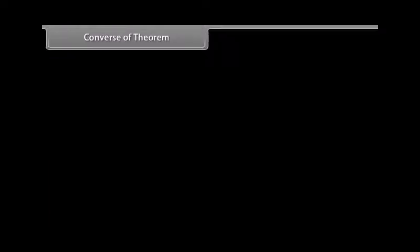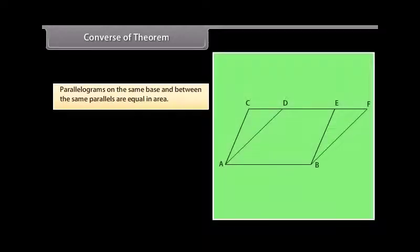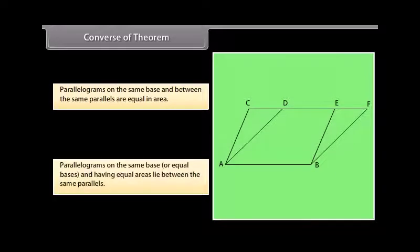Converse of theorem. We have proved that parallelograms on the same base and between the same parallels are equal in area. The converse of this theorem is also true, which says that parallelograms on the same base or equal bases and having equal areas lie between the same parallels.